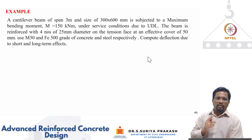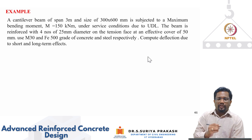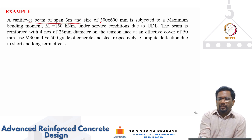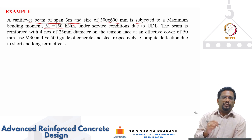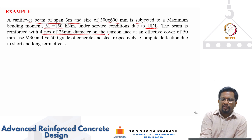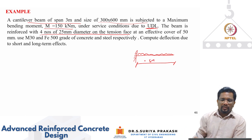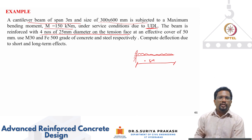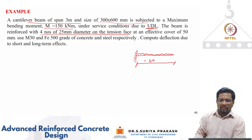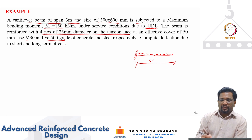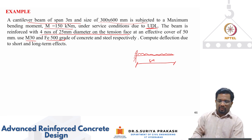Let's run through an example based on what we have discussed of various deflection calculation procedures. The example deals with a cantilever beam of span 3 meters with a size of 300 by 600 mm, subjected to a maximum bending moment of 150 kNm under service conditions due to uniformly distributed load. The beam is reinforced with four numbers of 25 mm diameter bars on the tension side. We'll compute the short-term and long-term deflections using M30 concrete and Fe500 grade steel.